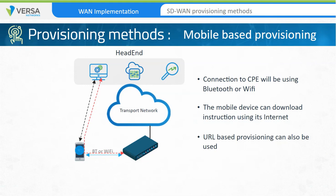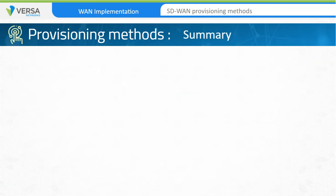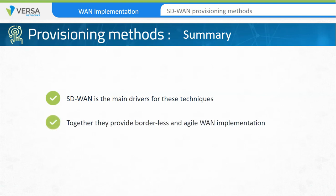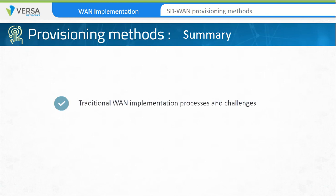All of these techniques help reduce site turn-up time and costs. SD-WAN evolution is the main driver for the adoption of these techniques, and together these concepts help provide true, borderless, and agile WAN implementations. This is the end of Session 6 of the VersaEssentials series. In this session, we discussed traditional WAN implementation and its challenges, and SD-WAN implementation and its benefits. Thank you for your participation in this session, and we hope you found it informative.